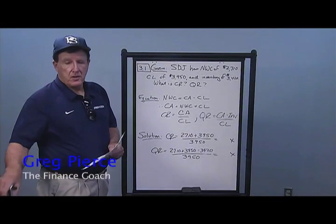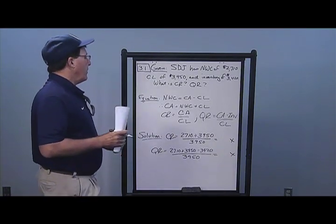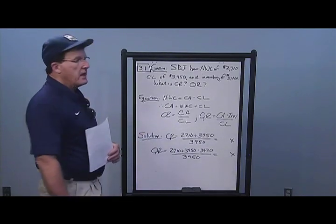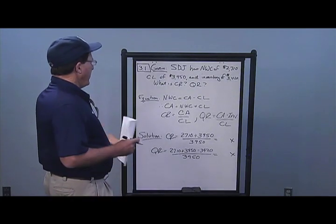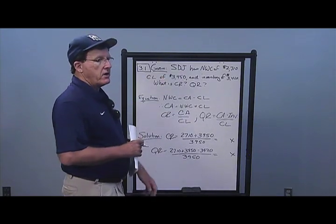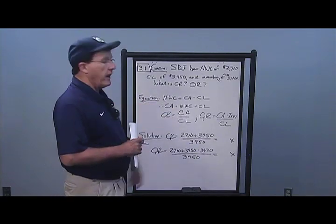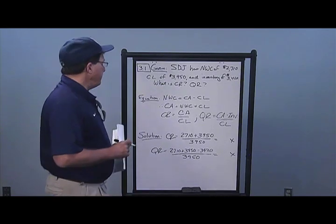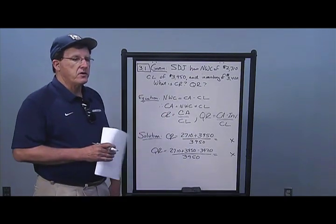Let's get started with Chapter 3, Problem 1. SDJ Corporation has networking capital of 2710, current liabilities of 3950, and inventory of 3420. We need to calculate the current ratio and the quick ratio. Since current assets are not given, we calculate them first: current assets equal networking capital plus current liabilities. Then we can plug current assets into the current ratio equation.